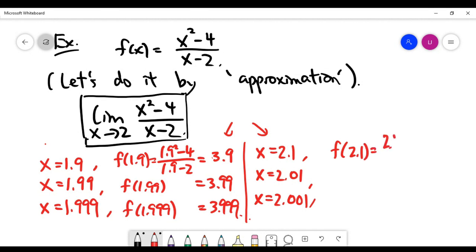For example, you can do f of 2.1, which is 2.1 squared minus 4 divided by 2.1 minus 2. And the answer is going to be 4.1.